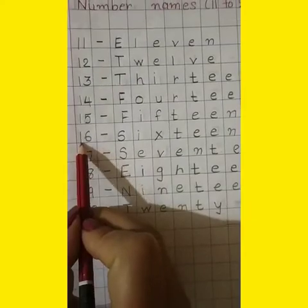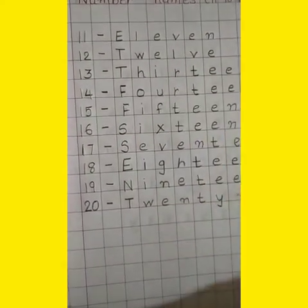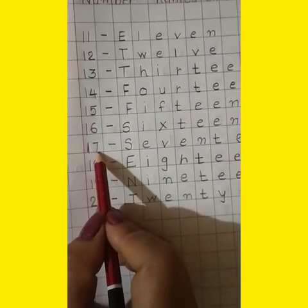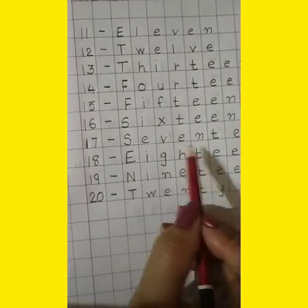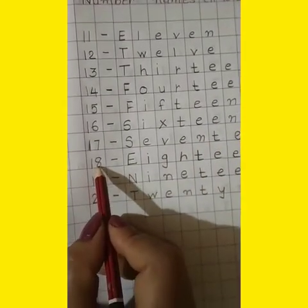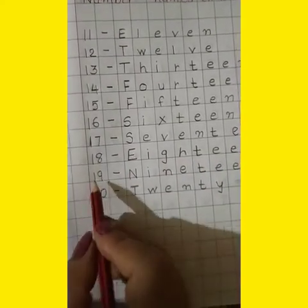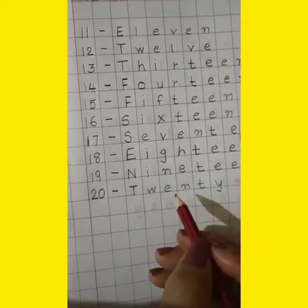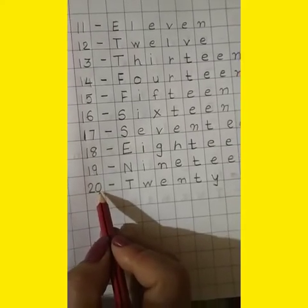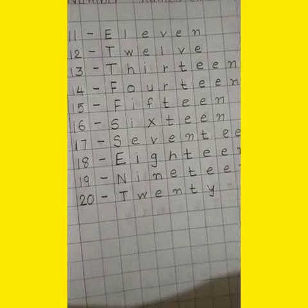15 after which number comes? 16 — S-I-X-T-E-E-N. 17 — S-E-V-E-N-T-E-E-N. 18 — E-I-G-H-T-E-E-N. Then 19 — N-I-N-E-T-E-E-N. 20 — T-W-E-N-T-Y. 20.